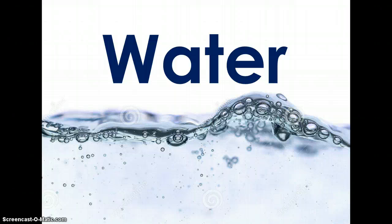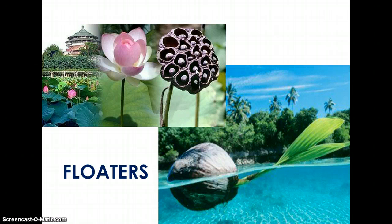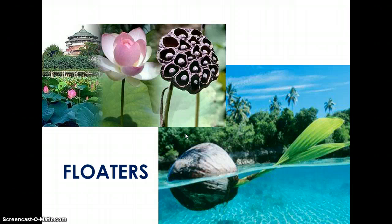Water is another method of seed dispersal. In order for a seed to be dispersed by water it's going to have to float — if it sinks, it probably won't make it. Here are two examples: water lilies on the top left, whose seeds grow right in the water and will float away from the parent plant when released. Down here we have a coconut — coconuts grow near the shore, are circular in shape so they can roll off the beach into the water, and the current can transport them some distance away.